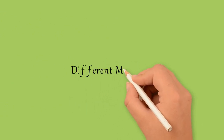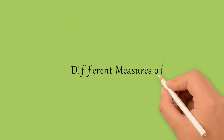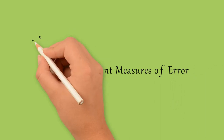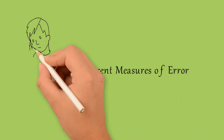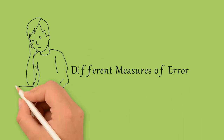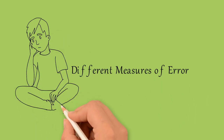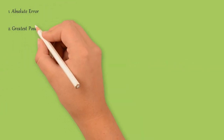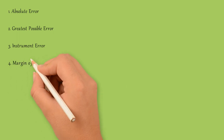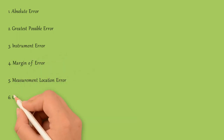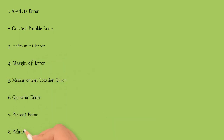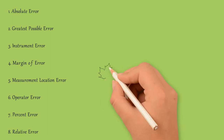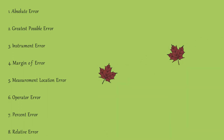Now moving towards different measures of error. Hum aage ja ke in sab errors ko discuss karenge, lekin pehle main ek dafa in sab errors ke naam bata deti hoon: sab se pehle absolute error, phir greatest possible error, then instrument error, then margin of error, then measurement location error, then operator error, then percent error, and finally relative error.